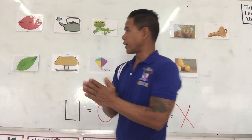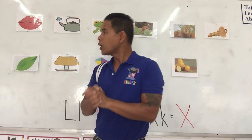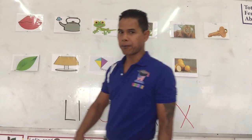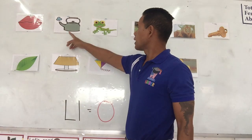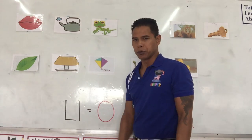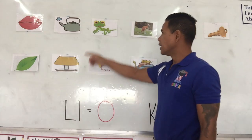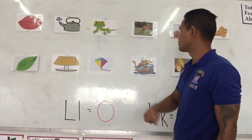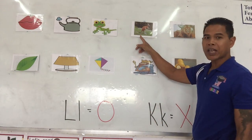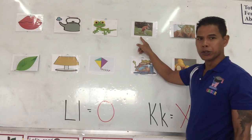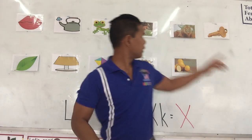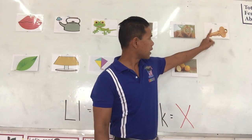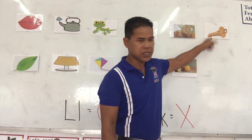Let's look at the pictures up here. We have lips, kettle, lizard, and kangaroo.